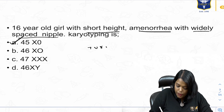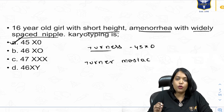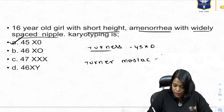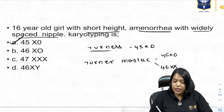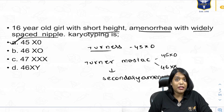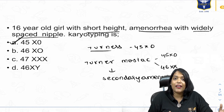Pure Turner syndrome is 45XO. There are also Turner mosaic cases where some chromosomes are 45XO and some are 46XX. Turner mosaic can present with secondary amenorrhea. Turner syndrome is a very commonly asked MCQ topic. Amenorrhea is one topic you must be perfect in for gynecology — along with cervical cancer, these two should always be perfect.